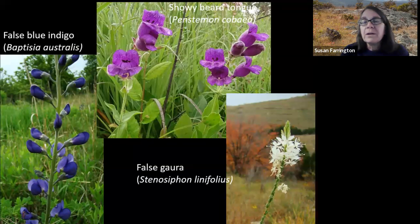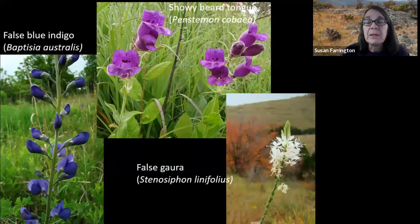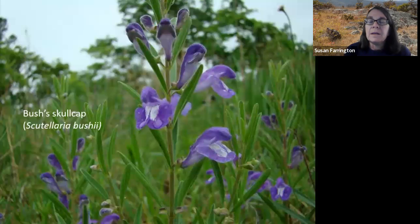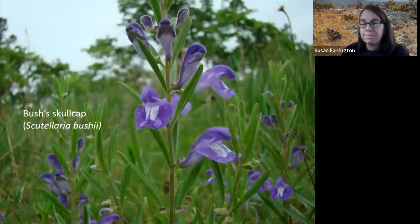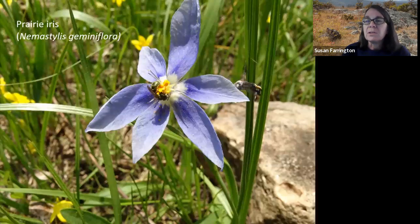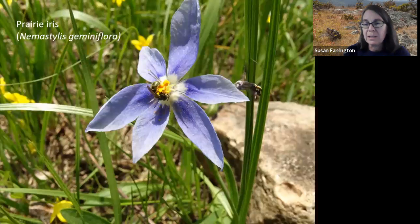Other more rare glade plants known from limited distributions in Missouri include, from southwestern glades, false blue indigo, showy beardtongue, and false garlic. Bush's skullcap is an Ozark endemic, found only in the Missouri and Arkansas Ozarks, and the heart of its population is centered in the Current River Hills watershed. Prairie iris is found scattered across the state, but each bloom lasts only for a few hours of a single day, so it's an easy one to miss.